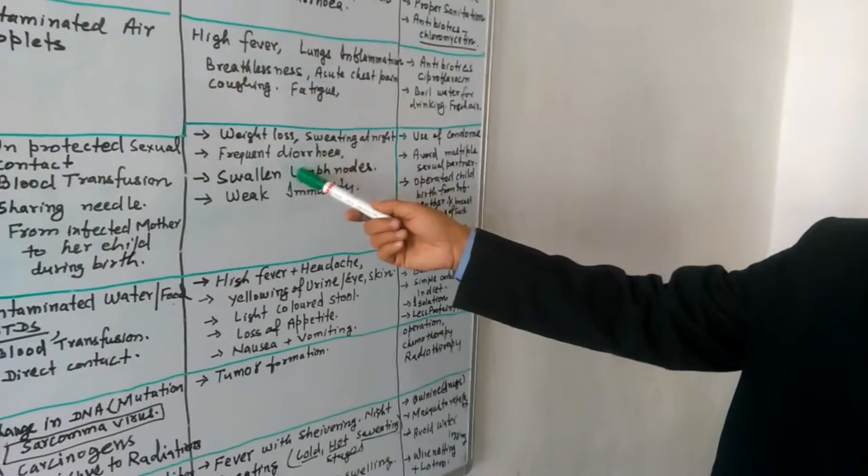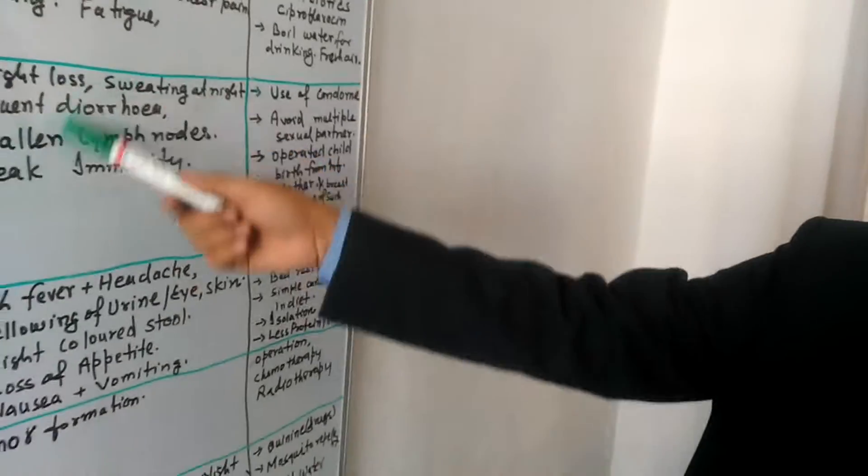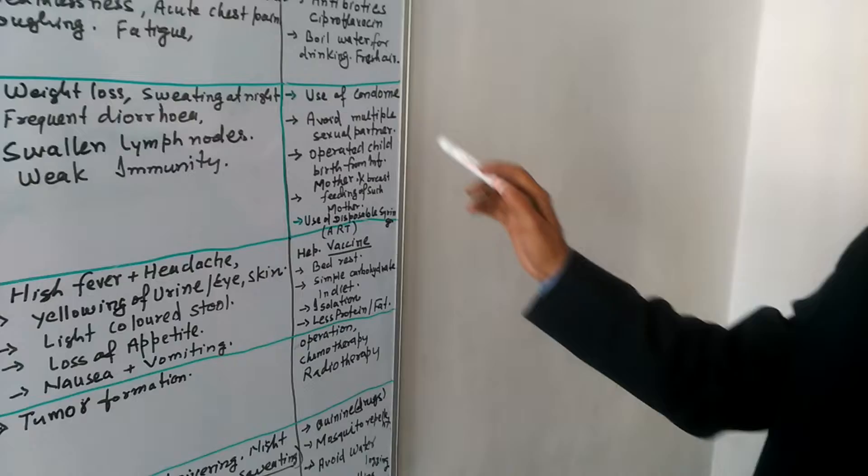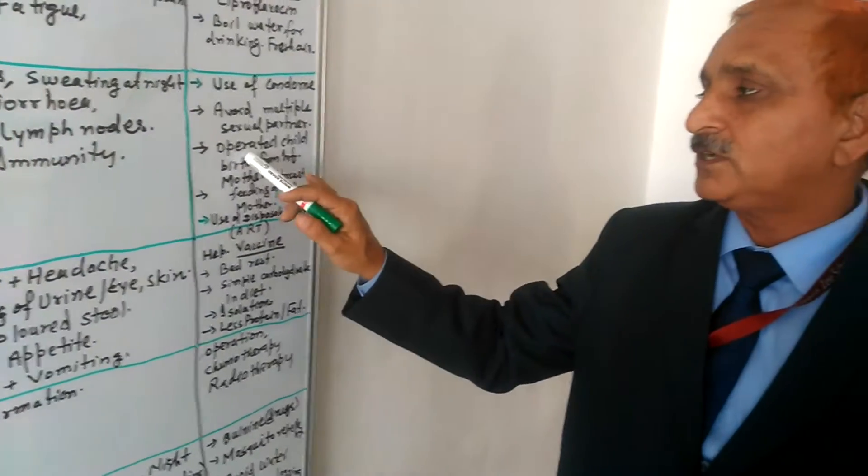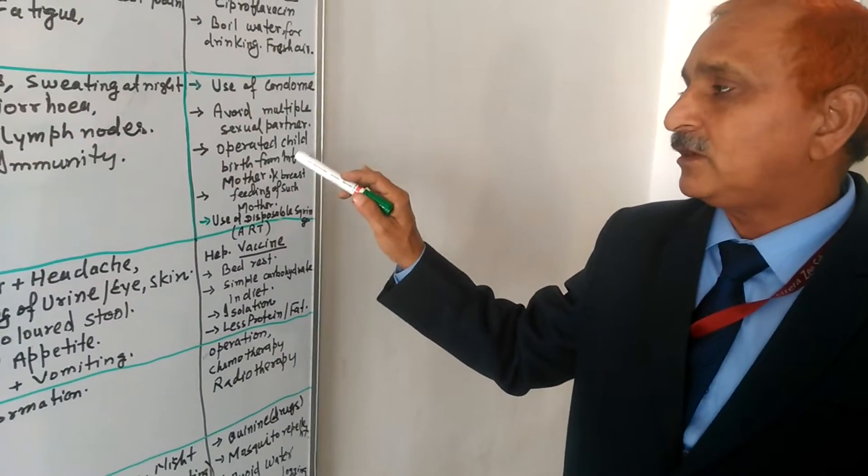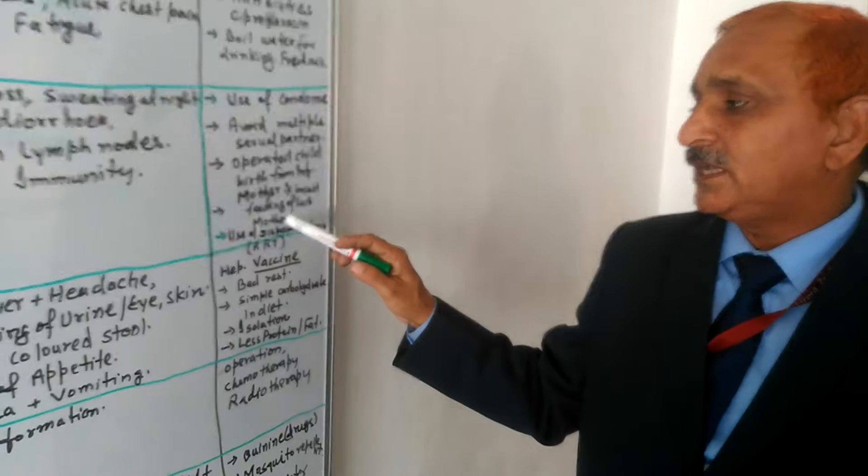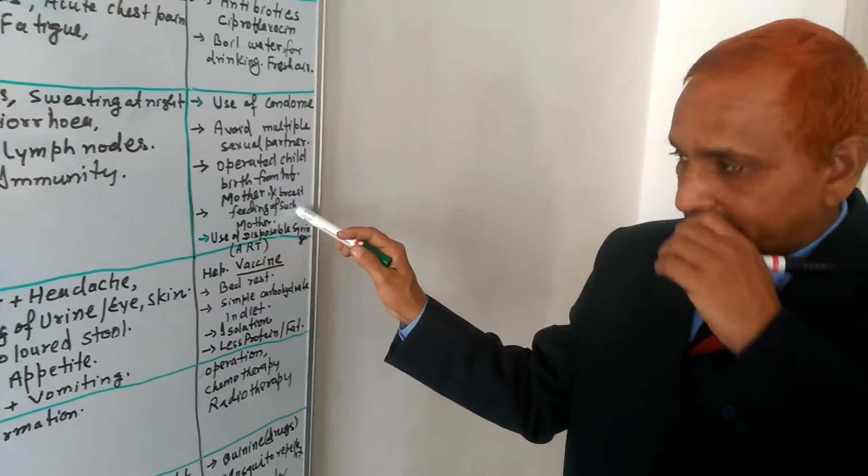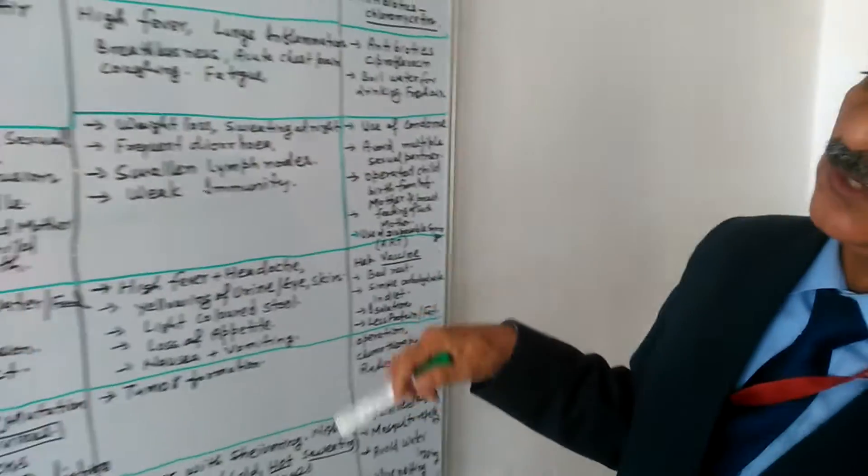Weight loss, sweating at night, frequent diarrhea, swollen lymph nodes and weak immunity. These are the symptoms you develop. Use of condoms during sexual contact, avoid multiple sexual partners. Operated childbirth from the infected mothers and breastfeeding should be avoided by that mother. Use of disposable syringe is the cure.